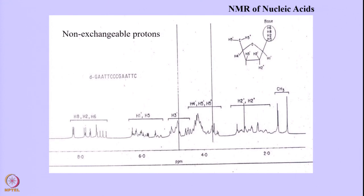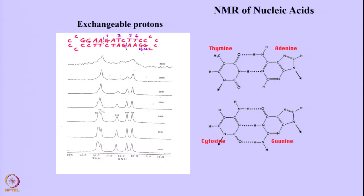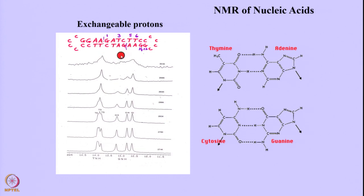This is the typical one-dimensional spectrum. As for the imino protons: they appear between 12 to 15 ppm, and these protons must be observed in water — the experiment will have to be performed in H2O. Otherwise in D2O these protons exchange out and you will not be able to see those signals.